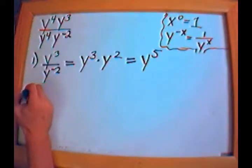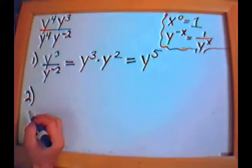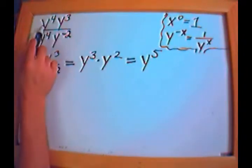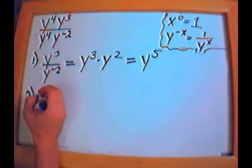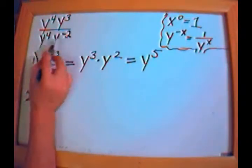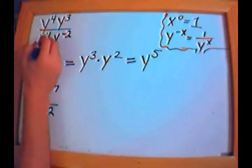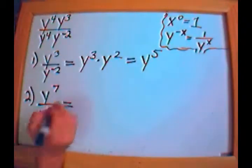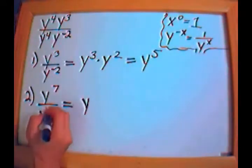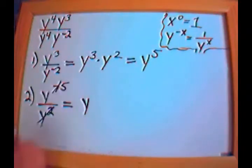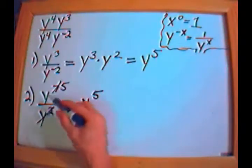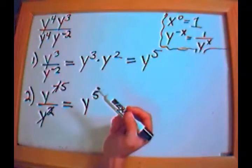Method number two: instead of canceling first, I combine exponents in the numerator and denominator. On top, 4 plus 3 gives y to the 7. On the bottom, 4 plus negative 2 gives y to the positive 2. Simplifying y⁷ over y², I subtract: 7 minus 2 is 5, so I get y to the fifth — the same answer.